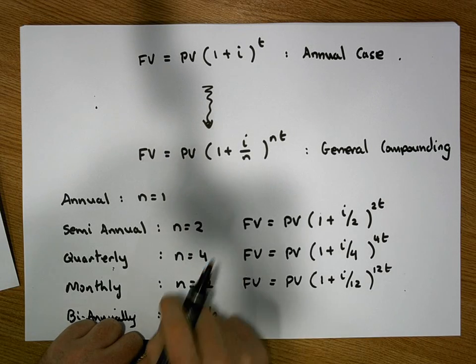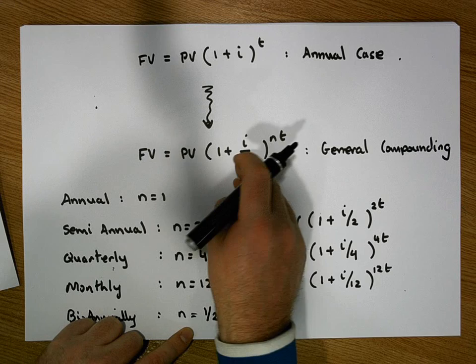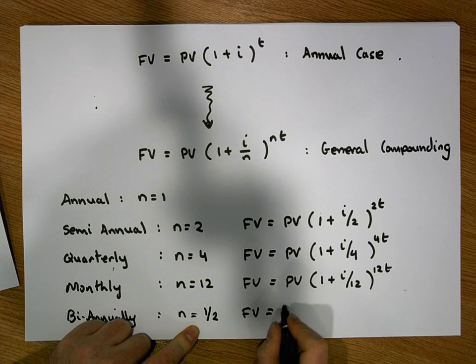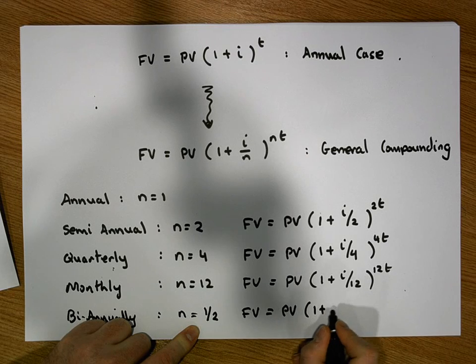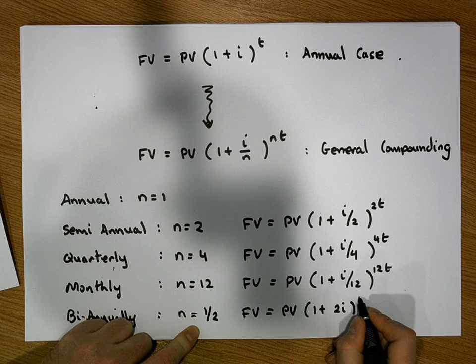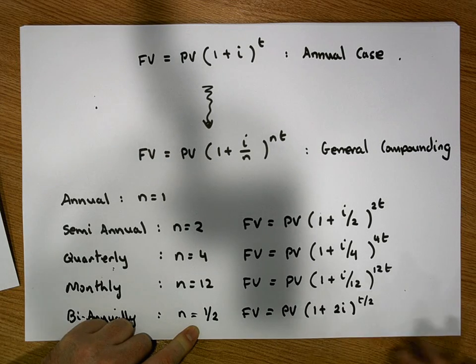And with a little small bit of algebra, when you divide by a fraction, it's the same as inverting and multiplying. This becomes the future value is equal to the principal value times 1 plus 2I raised to the power of T over 2.